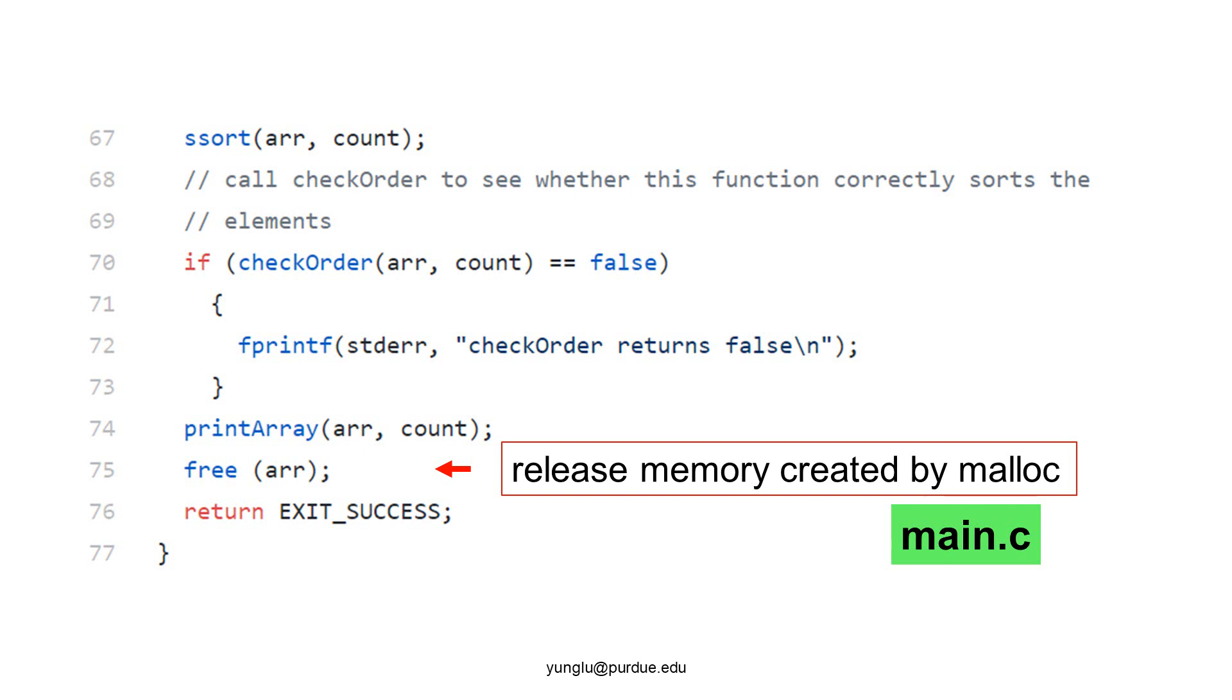If fopen fails, the program returns EXIT_FAILURE. The main function reads integers from the file and counts the number of integers. Then, the main function allocates memory to store the integers. Using fseek, the program returns to the beginning of the file. The program reads the file again and stores the integers in the array.